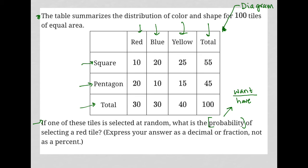What is the probability of selecting a red tile? What do I want? I want a red tile. How many red tiles are there? Well, there's actually 30 red tiles: 10 square and 20 pentagon. It doesn't say that I care about the shape of the tile. All the question says is that I want a red one.